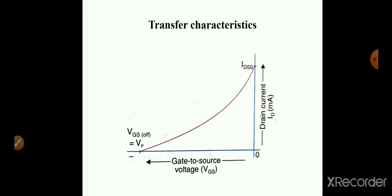Next is the transfer characteristics, also called the transconductance curve. In transfer characteristics, we plot the drain current along the y-axis and gate-to-source voltage along the x-axis at a constant drain-source voltage. Drain current is represented in milliampere range. When we increase the gate-to-source voltage — meaning more reverse biasing — the drain current decreases. At VGS equal to 0, the maximum drain-source current IDSS flows through the channel.